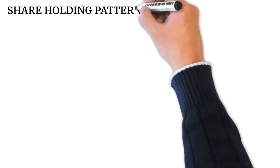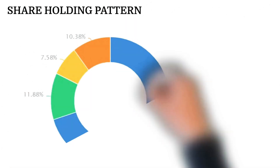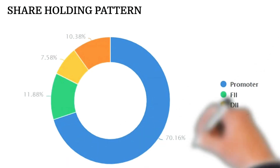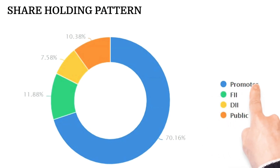Pidilite checks boxes on both fronts — technical and fundamental. Now let's look at the third pillar: the shareholding pattern, which is very important from a demand-supply perspective. The pie diagram shows a clear distribution of holdings between promoters, foreign investors, domestic investors, and public. Looking closely, the promoter — shown in blue — holds 70.16 percent. This means the promoter still believes in the growth story, which is very important for the stock.